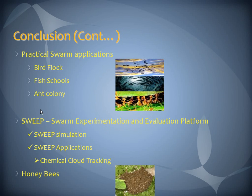Moving on to the swarm experimental and evaluation platform, we gave a brief idea of how these applications really work, along with examples such as chemical cloud tracking. Furthermore, we looked into how swarm agents work — swarm agents go out and identify the best solution in the environment and broadcast it back to the rest of the swarm.